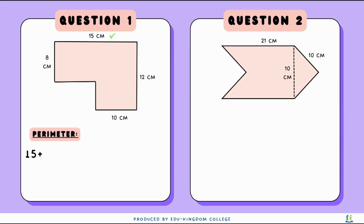Perimeter is essentially just adding all the borders together. So we have the numbers given: 15, 12, 10, and 8. But for the lines we don't have, horizontally we can find the missing border by doing subtraction. We know the length on top is 15 and the length below is 10, so we do 15 minus 10, which gives us 5 centimeters.